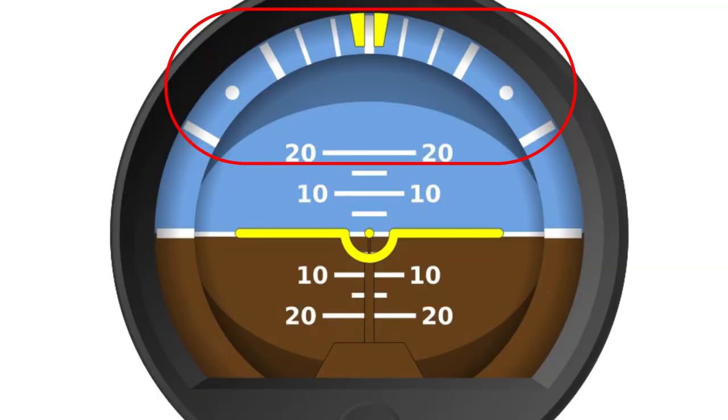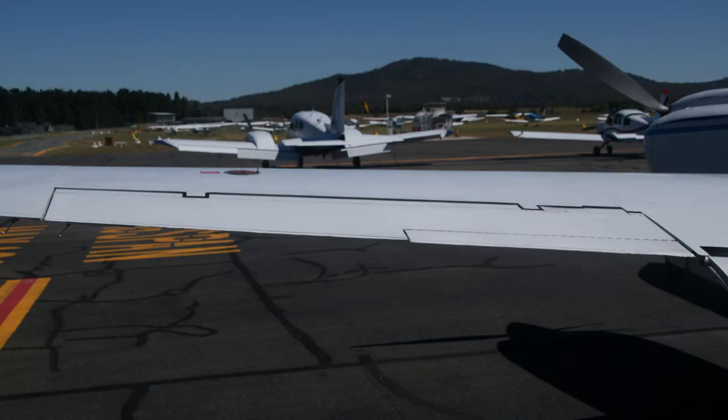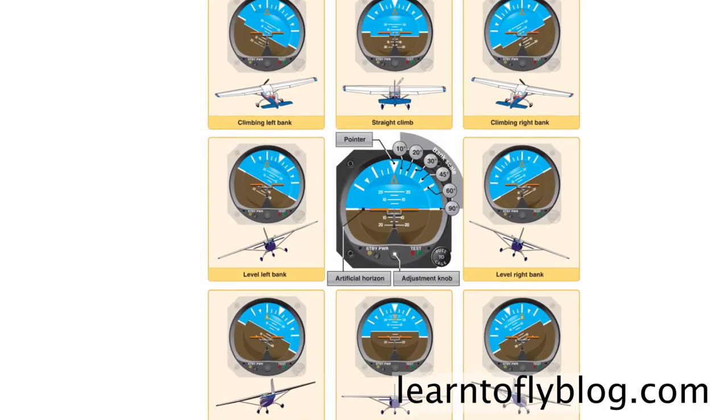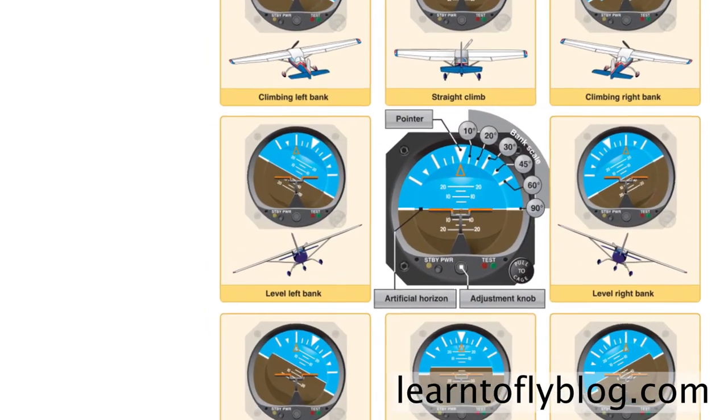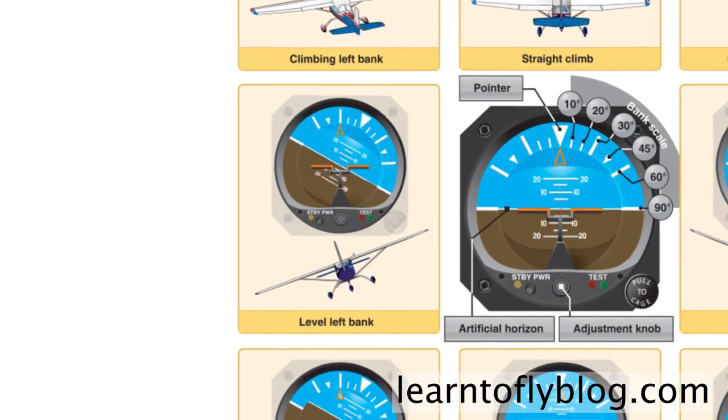These degrees at the top are called the bank index. When you roll left or right through using the ailerons on the wings, your angle of bank will change and you can notice that on the attitude indicator like this.